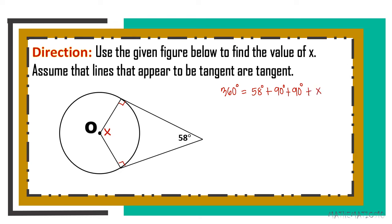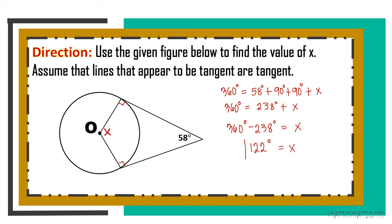We don't know the measure of angle X yet. So: 58 plus 90 plus 90 equals 238 degrees. Adding X, we have 238 degrees plus X equals 360 degrees. By transposition: X equals 360 minus 238, so X equals 122 degrees. Therefore, 122 degrees is the measure of angle X.